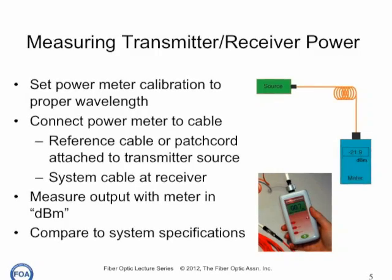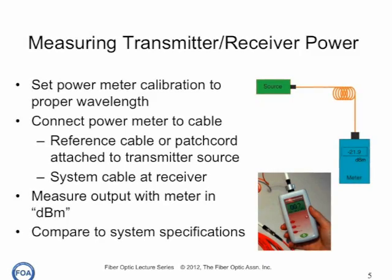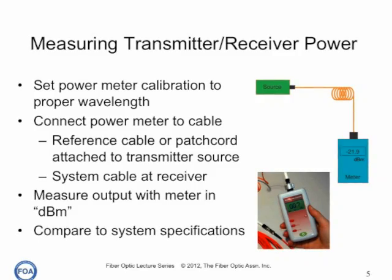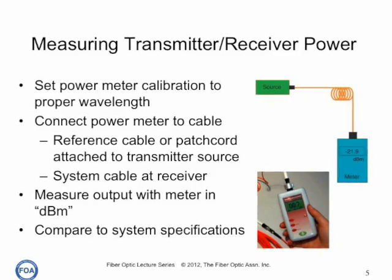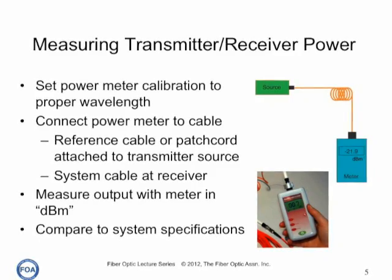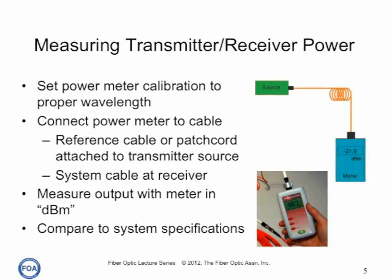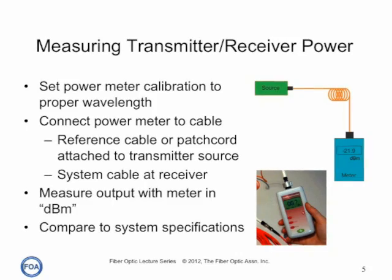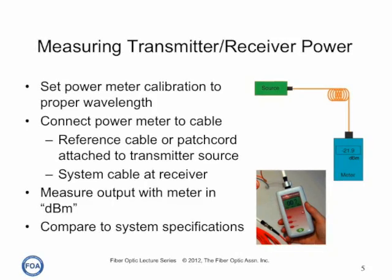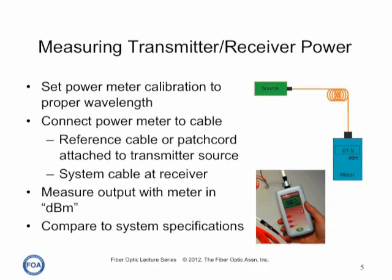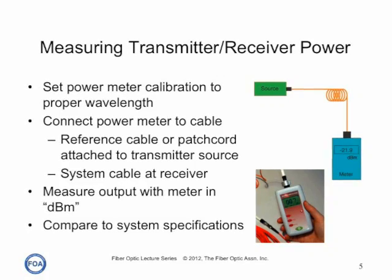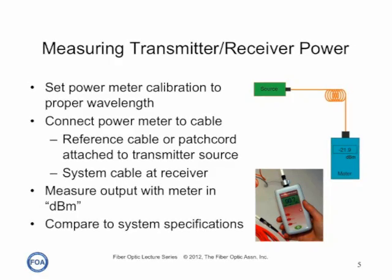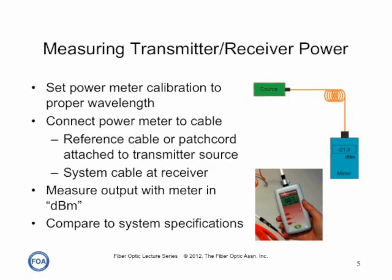When we're measuring transmitter or receiver power, we use an optical power meter calibrated to the proper wavelength. We'll measure the power from a transmitter by attaching a reference cable or a patch cord and measuring the output of that short cable. At the receiver, we'll merely unplug the receiver cable, plug it into our power meter, and make a measurement. We usually make this measurement in dBm — dB referenced to a milliwatt — and we compare it to system specifications.